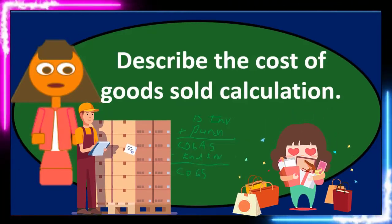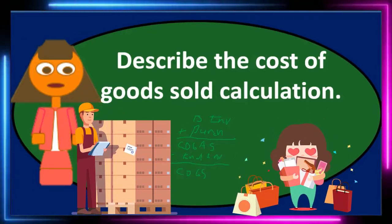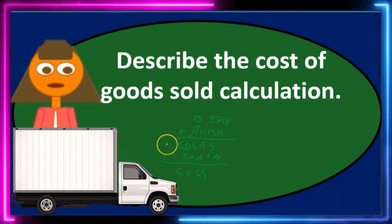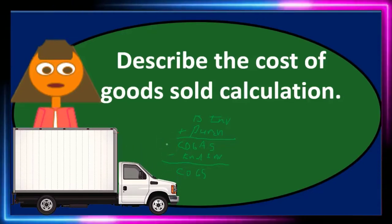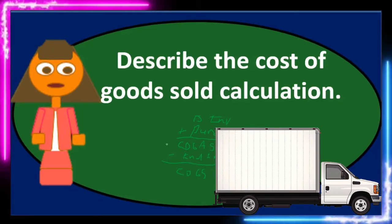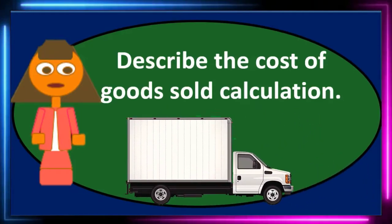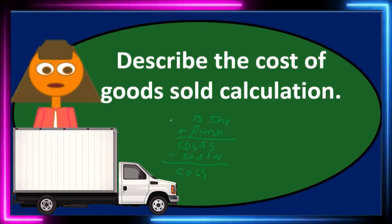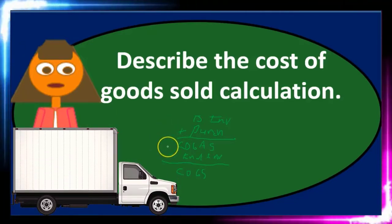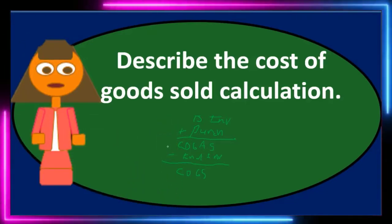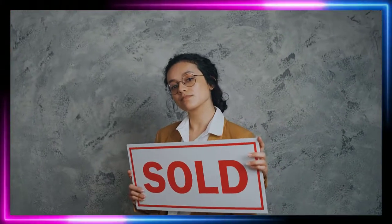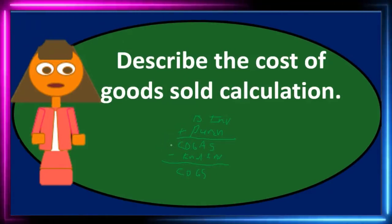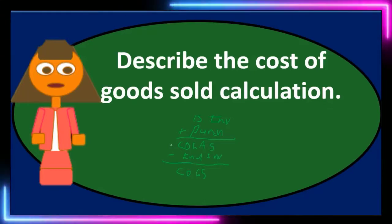The cost of goods sold calculation is very important and you'll see different types of thought processes similar to it. For example, tracking supplies uses a similar calculation. Supplies are similar to inventory in that we need to track them as we go. Later on, we'll talk about tracking materials in a similar way. It makes sense: beginning inventory plus purchases equals what we could have sold during, say, a month — that's the cost of goods available for sale.